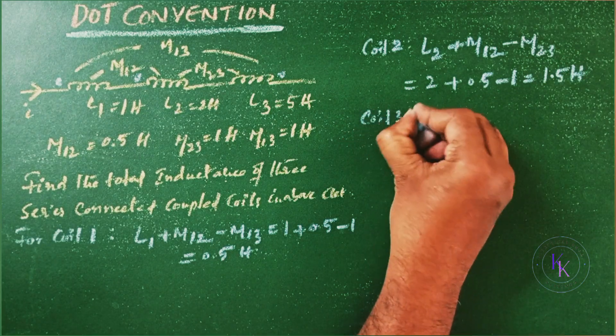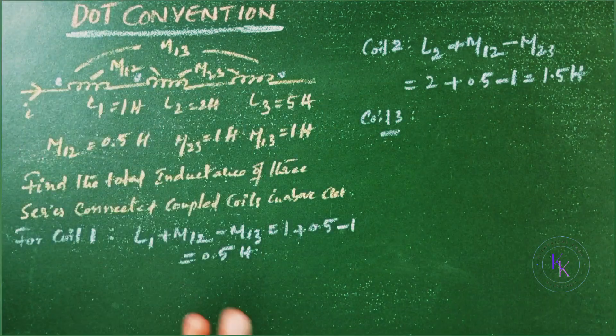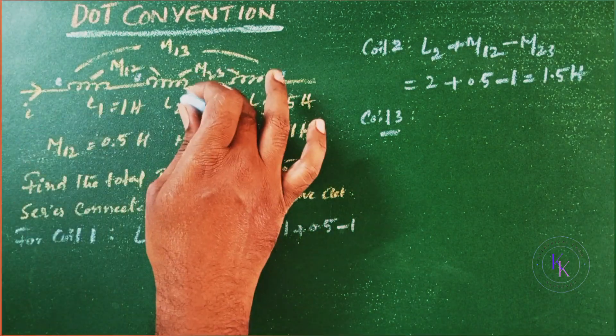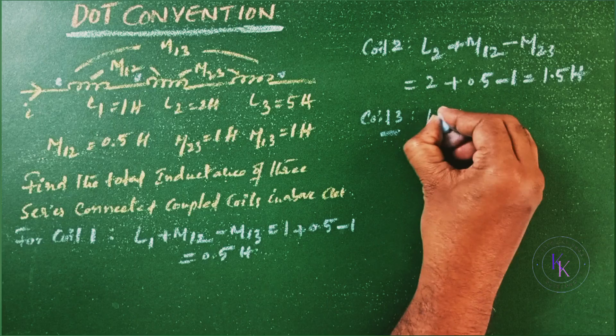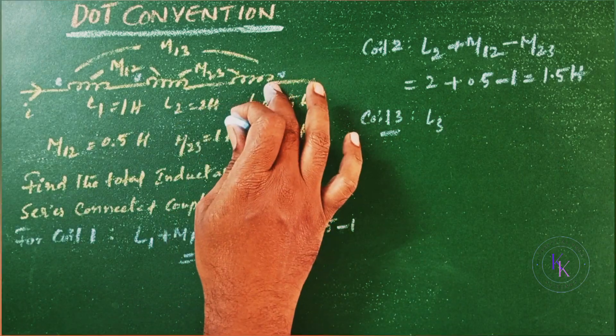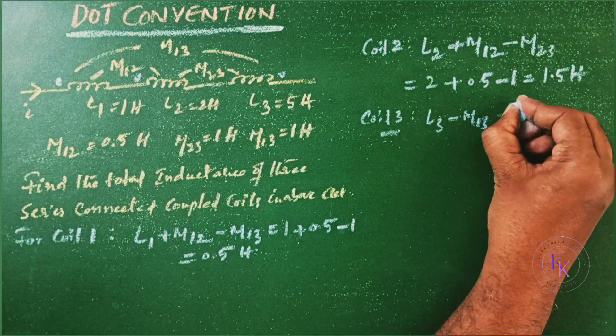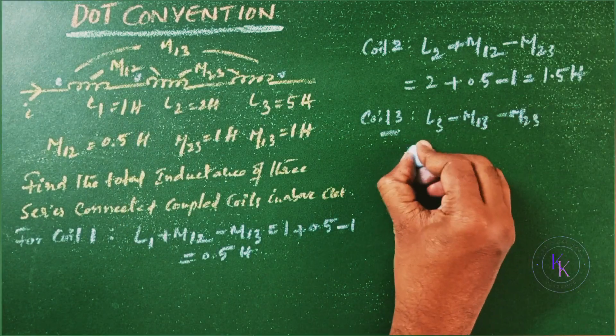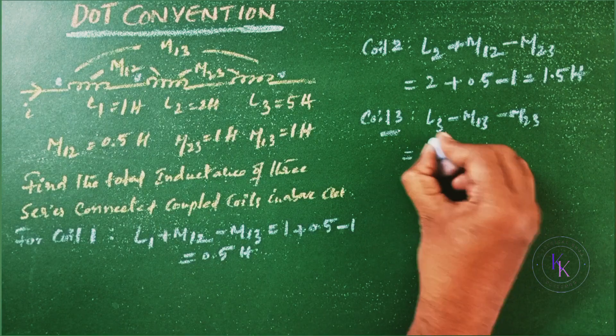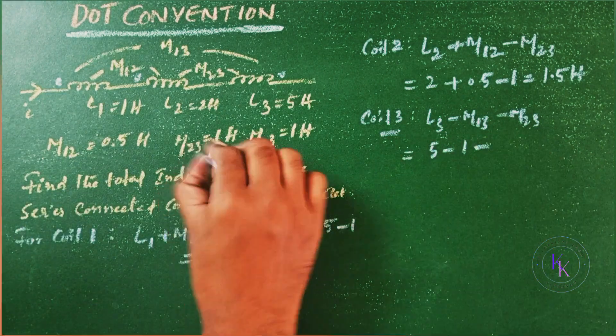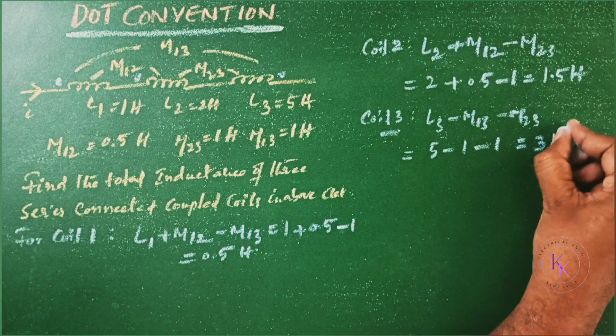Now for coil III. Coil III also connected to L1 and L2. Now there is mutual coupling between L1 and L2. The self inductance of the coil III is L3 and here it is leaving and here it is entering, so minus M13. And here also one is leaving one is entering, so M23. Now substitute this values. L3 is 5 minus M13 is 1 minus M23 is 1. This is 3 Henrys.